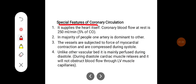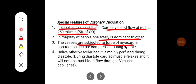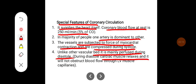Some special features of coronary circulation: it supplies the heart itself. Coronary blood flow at rest is around 250 ml per minute, which is 5% of the cardiac output. In the majority of people, one artery is dominant over the other. The vessels are subjected to the force of myocardial contraction and are compressed during systole. Unlike other vascular beds, the coronary circulation is mainly perfused during diastole, when cardiac muscle relaxes and does not obstruct blood flow through the left ventricular muscle capillaries.